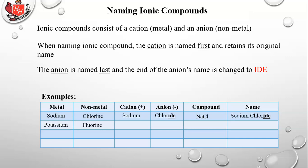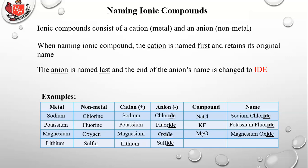Potassium and fluorine. Potassium retains its original name, fluorine becomes fluoride. There's the formula, KF, it's potassium fluoride. Magnesium oxide. Lithium and sulfur. Lithium retains its original name, sulfur becomes sulfide. Li2S, and that's lithium sulfide.